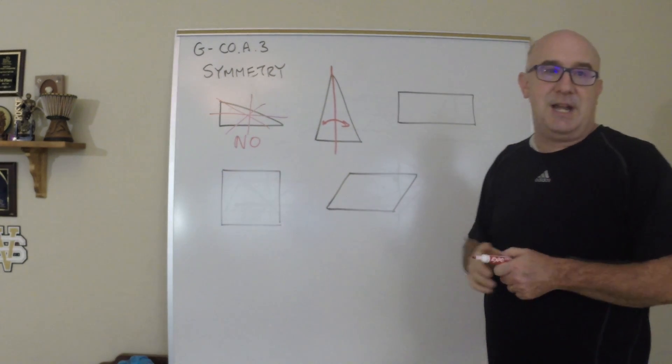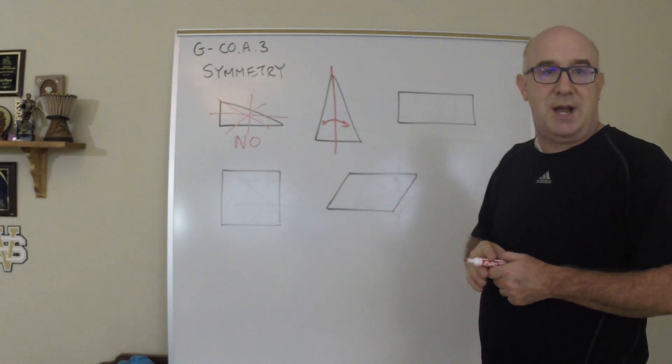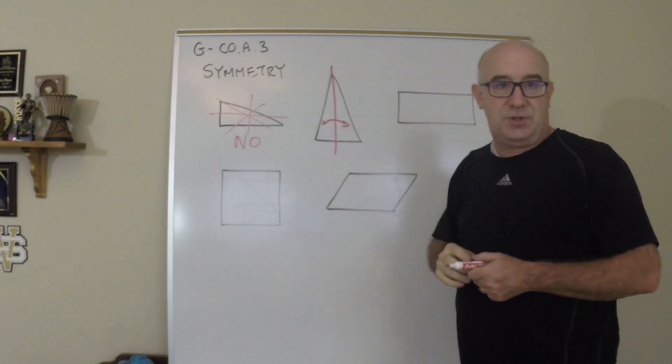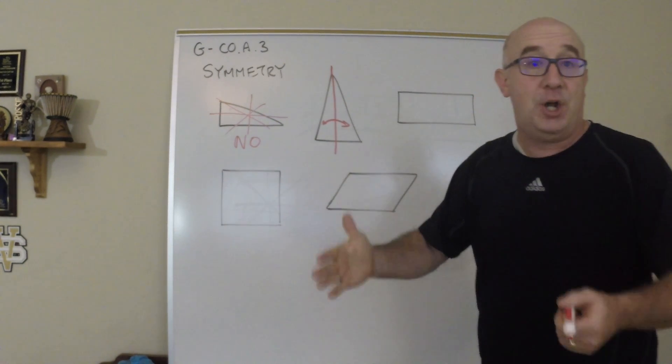Here, if this is an isosceles, there would be a vertical line of symmetry. This half would map to this half, and vice versa. All points would map onto itself.